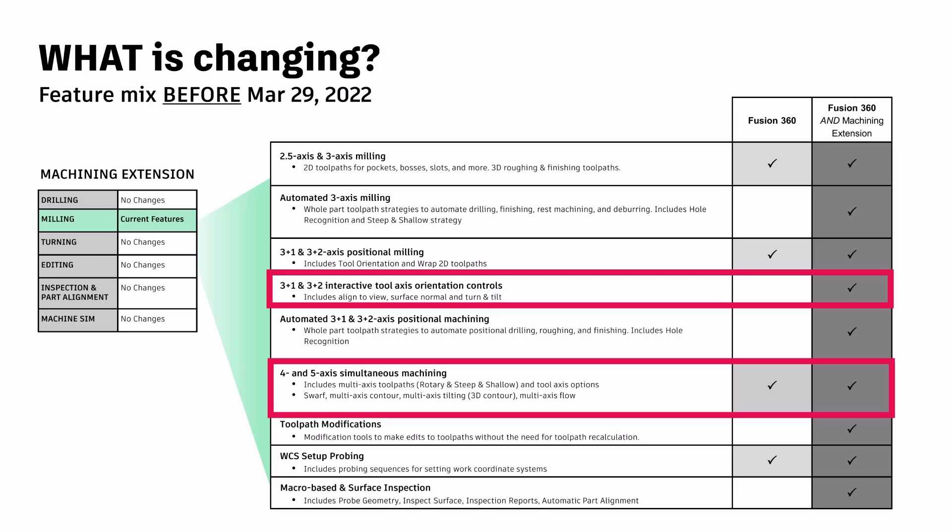These include toolpaths like Swarf, Multi-Axis Contour, and the Rotary toolpath. You, however, do not have access to a feature known as Interactive Tool Orientation Controls.